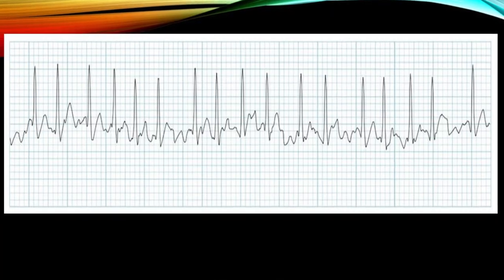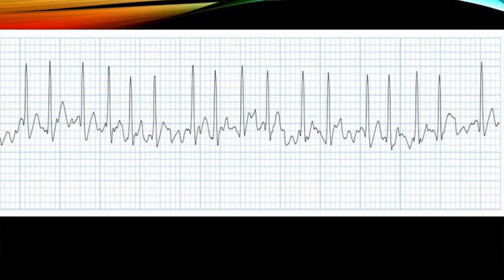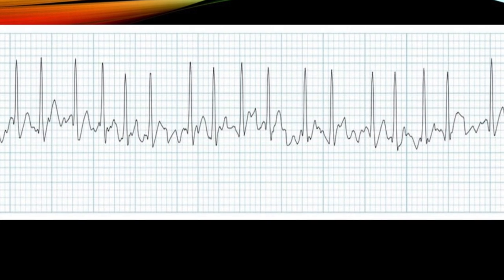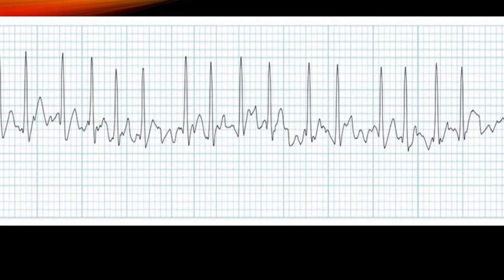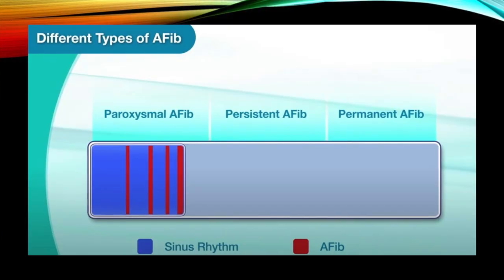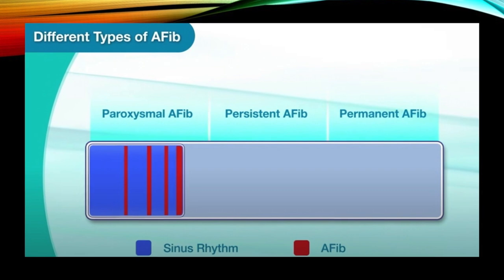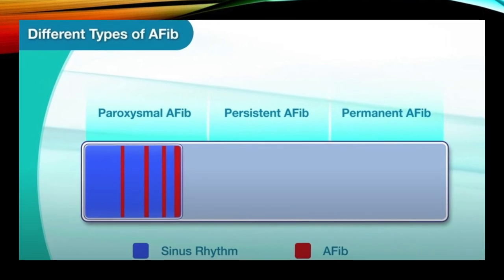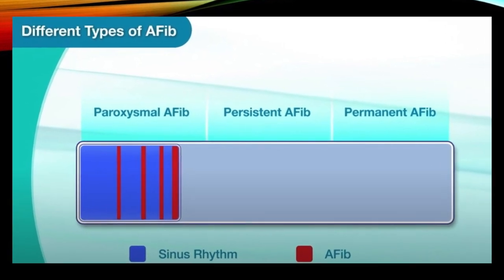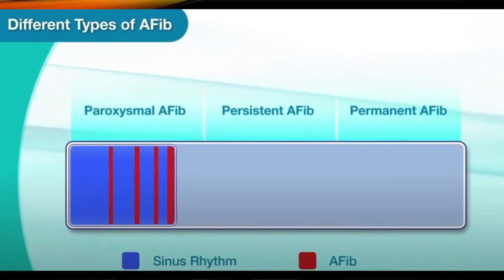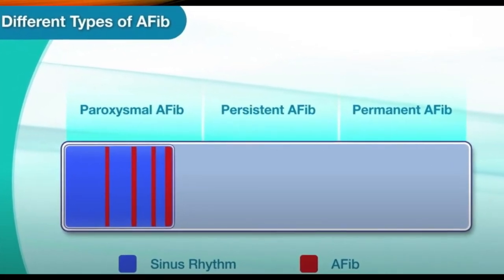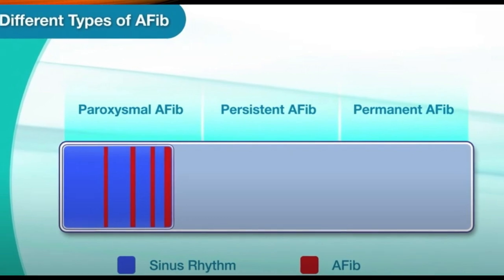What are the types of atrial fibrillation? We have three types: paroxysmal, persistent, and permanent. Paroxysmal atrial fibrillation comes and goes and terminates spontaneously without any intervention, usually within seven days from the onset of symptoms.